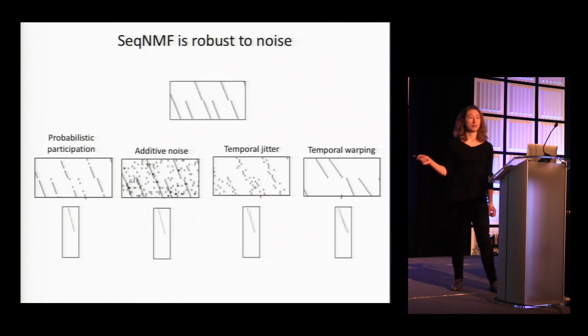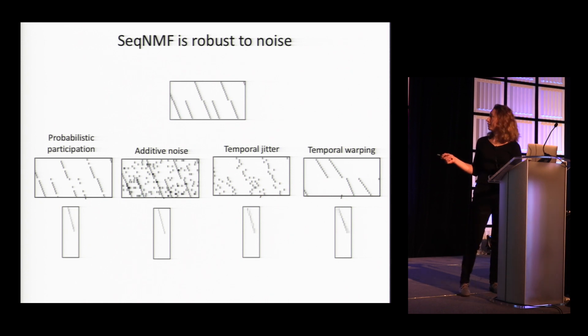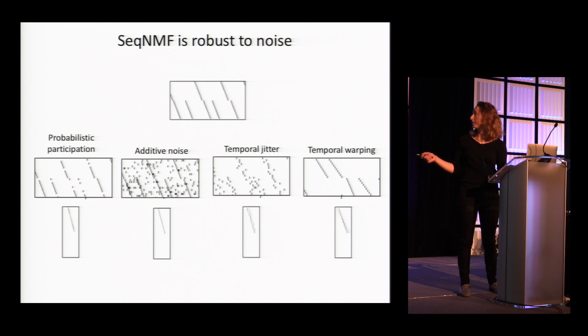We also test whether SeqNMF is robust to noise. We broke this into four different categories of noise that are common to neural sequences. You might have neurons that only probabilistically participate in the sequence. They sometimes miss a cycle. You might have additive noise where neurons randomly fire out of sequence. You might have temporal jitter where neurons fire at a slight offset in each instance of the sequence. And also, the entire sequence might be warped on each instance by a different amount. In each of these cases, SeqNMF was able to extract sequences that are similar to the ground truth data without noise. In the case of some temporal noise, the extracted sequences looked a little bit blurred, sort of like an average of the different cases.